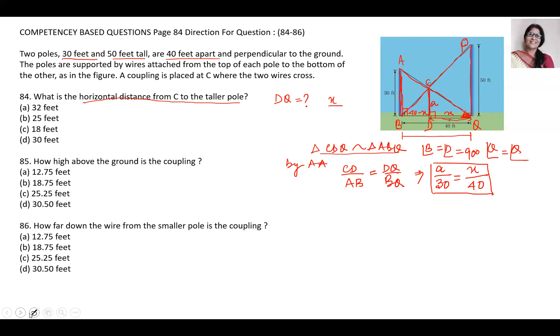Next, in the same way, triangle CBD and triangle PBQ are similar triangles. Again angle D is 90 degrees. Write the ratio again: CD upon PQ is equal to BD upon BQ. H upon 50 is equal to BD, which is 40 minus x, upon 40. This is equation two.